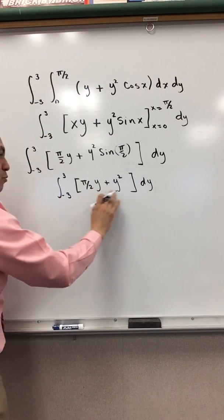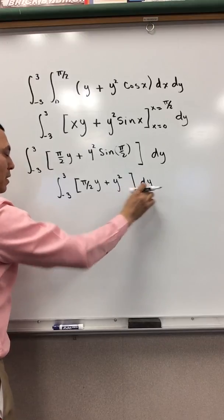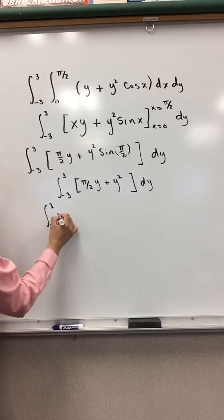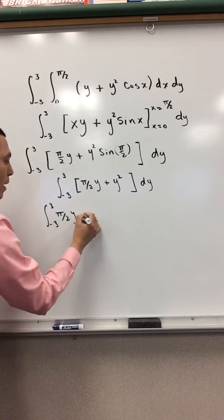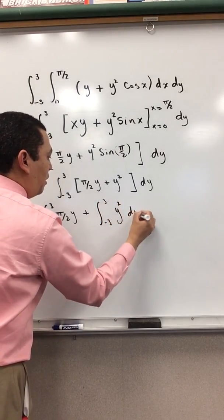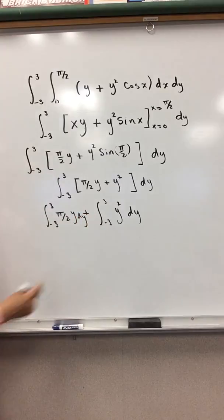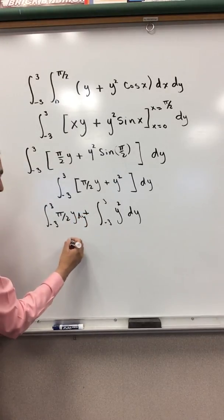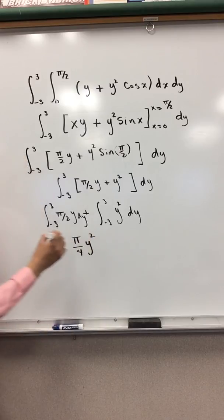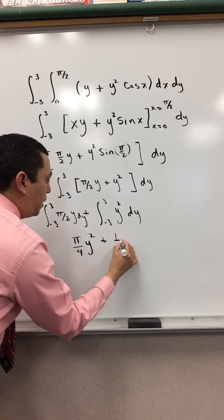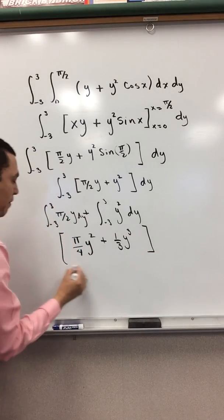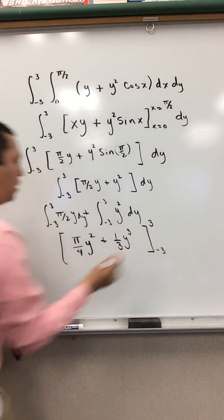Now my integral is with respect to y. I'm going to split it as: integral from negative 3 to 3 of (π/2)·y dy, plus integral from negative 3 to 3 of y² dy. Don't forget the dy. Integrating gives π/4·y² plus (1/3)·y³, evaluated from negative 3 to 3.